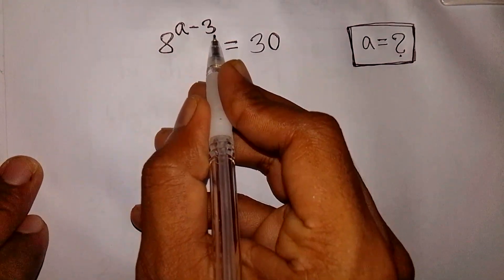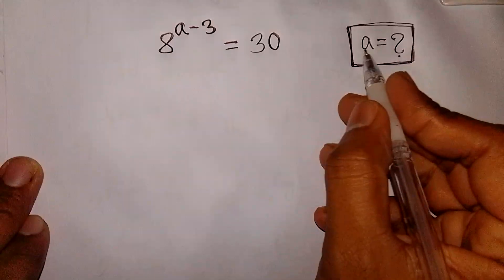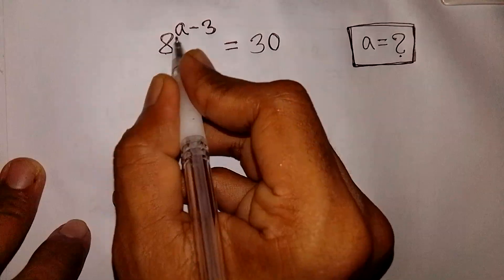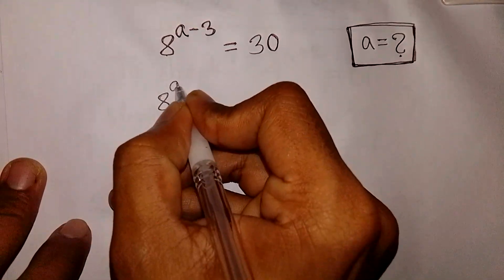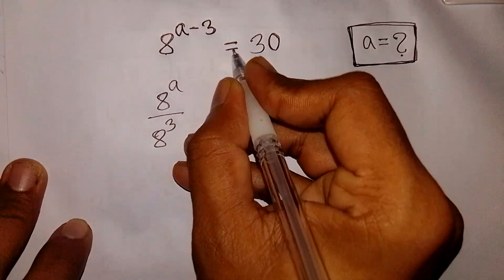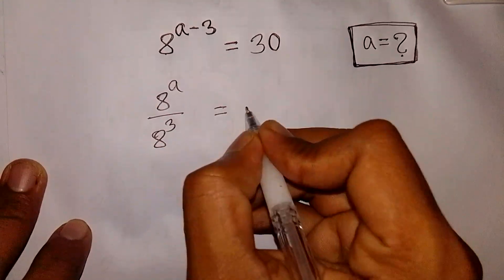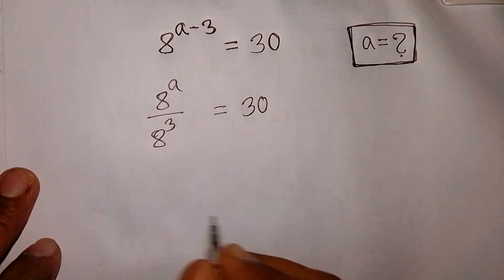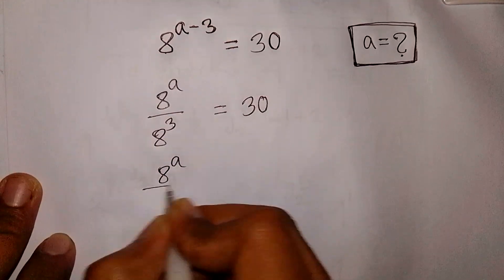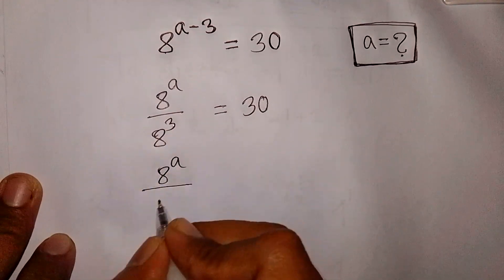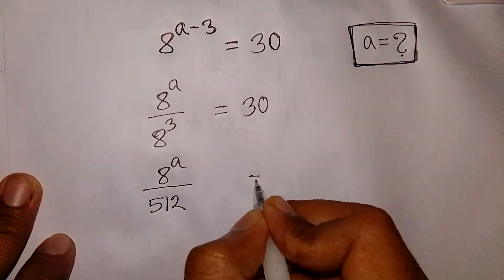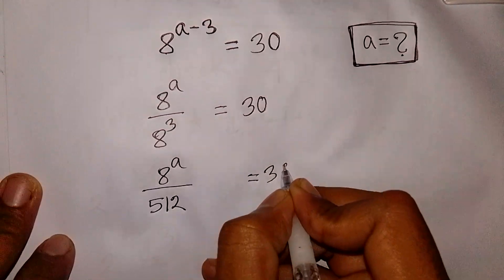8 to the power of (a minus 3) is equal to 30. Find the value of a. So 8 power (a minus 3) is the same as 8^a over 8^3, which equals 30. In the next step, 8^a over 8^3 is the same as 8^a over 512, and that equals 30.